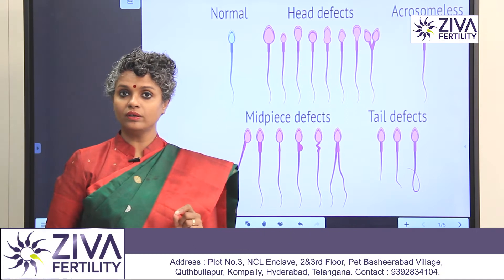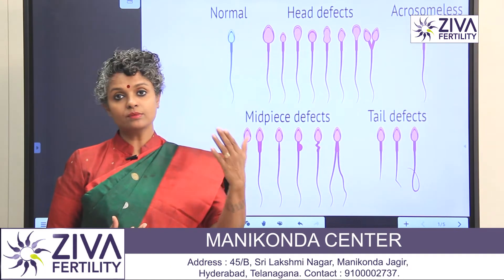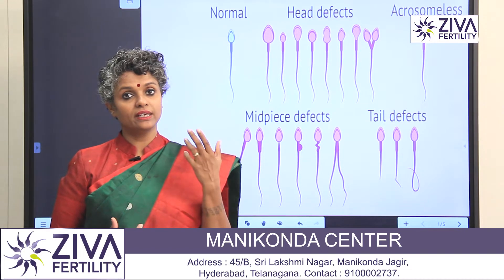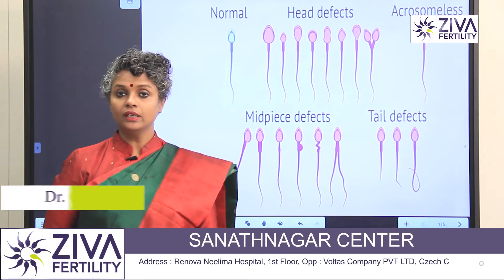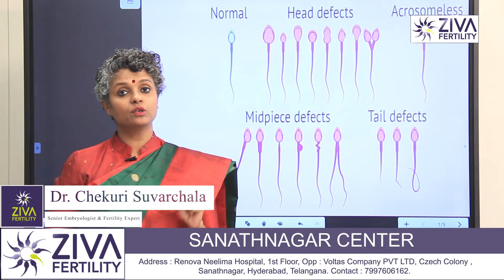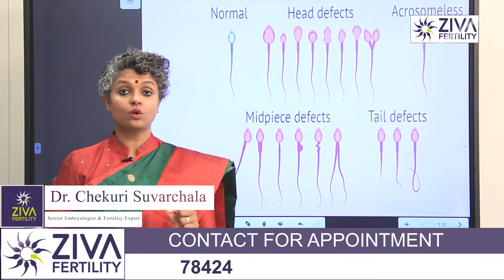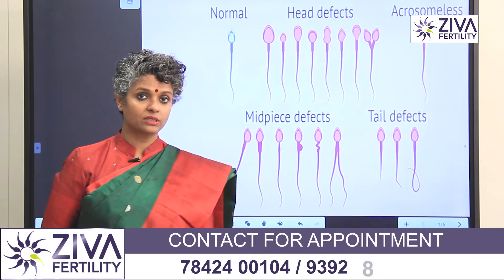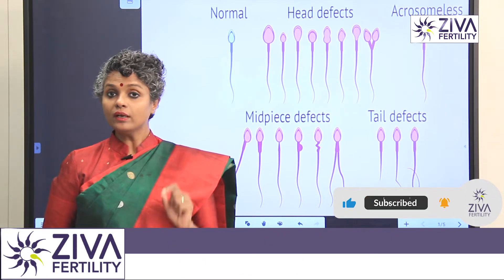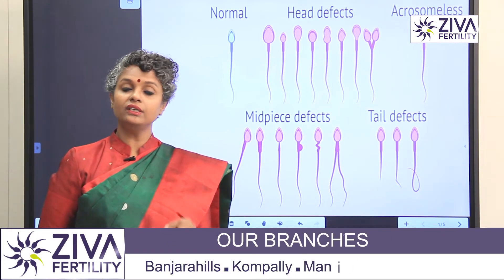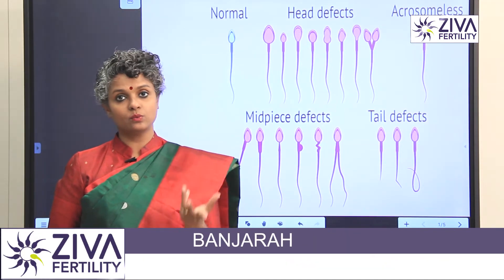Count is very important because the more the number of sperms, the more the chance that some sperms will reach the egg inside a uterus. Motility is an extremely important parameter because without motile sperms, pregnancy is almost next to impossible. When they are motile, they are able to make this journey from the vagina till the tube where the egg is waiting.